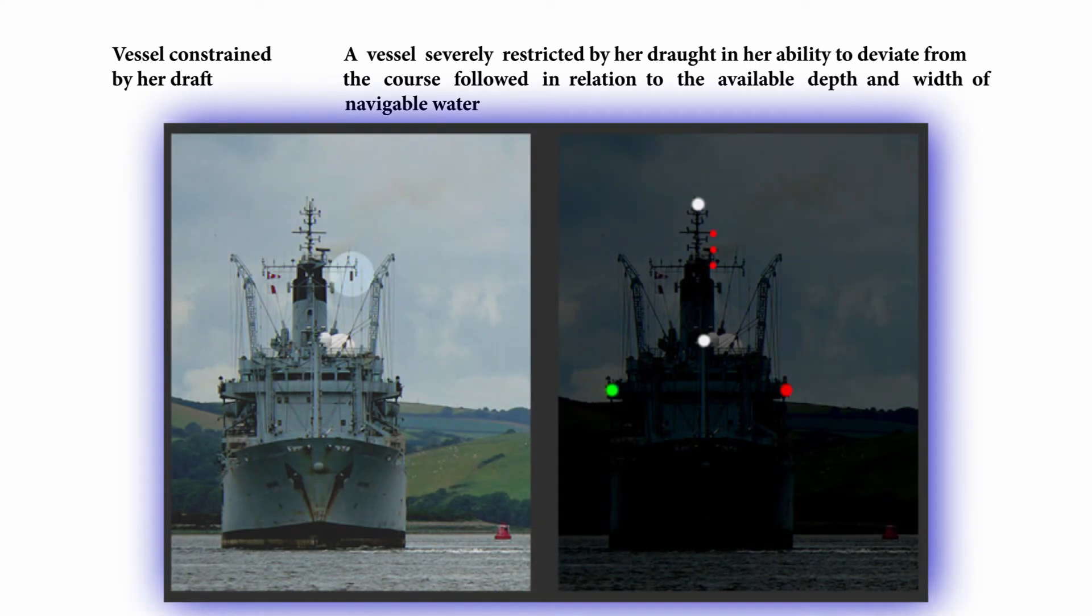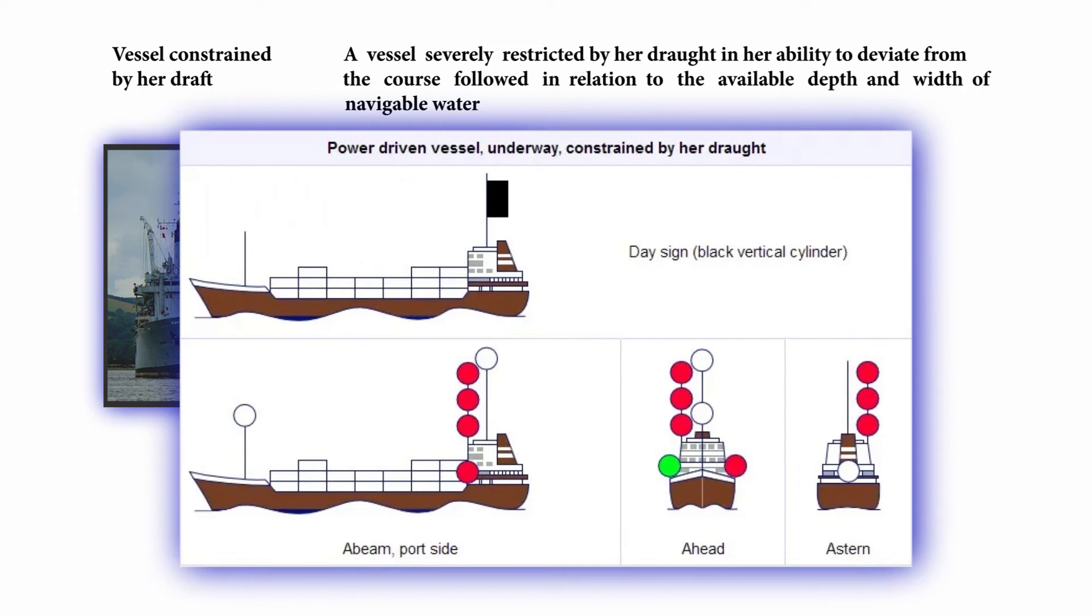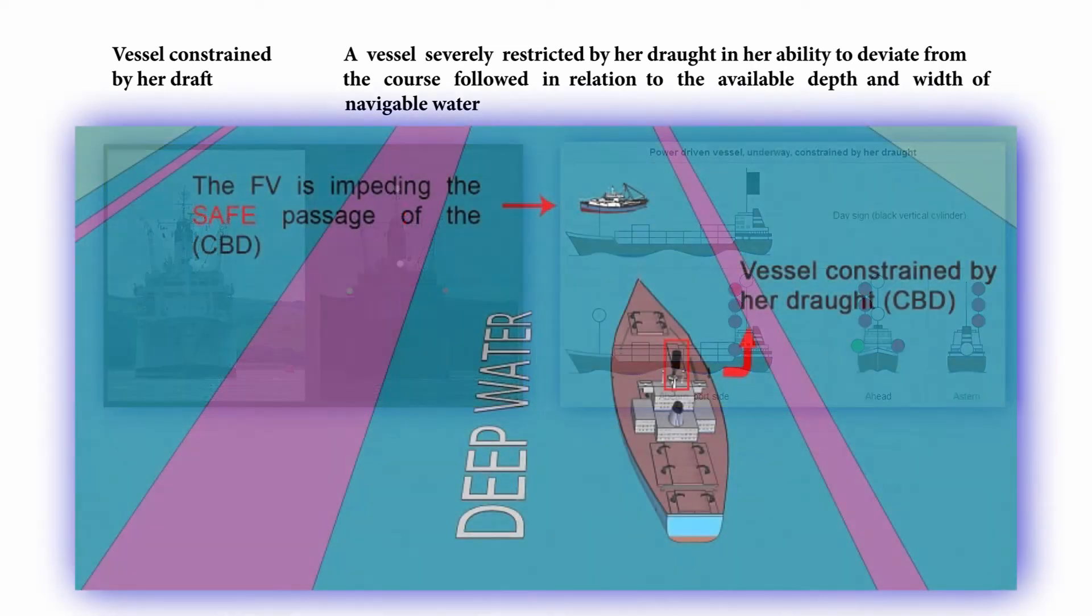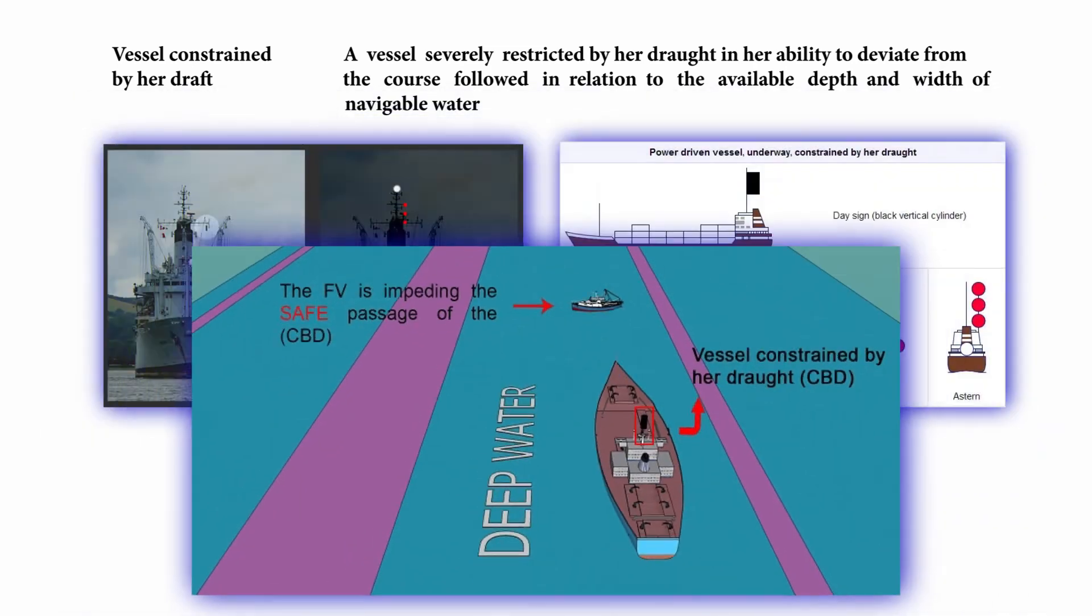Vessel constrained by her draft: this is from COLREG. This is a vessel thoroughly restricted by her draft in her ability to deviate from the course followed in relation to the available depth and width of navigable water.